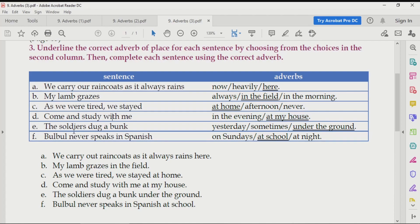Next, The soldiers dug a bunk. Now, students, you may want to know, what is dug a bunk? Dug means khoda. They dug a bunk. Bunk means it is a place where people usually hide. The soldiers dug a bunk yesterday. Yesterday becomes time. Sometimes becomes frequency. Under the ground becomes a place. So, this is the correct answer. Where did the soldiers dig a bunk? They dug a bunk under the ground.